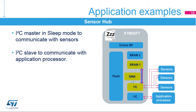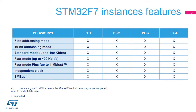Here is an example of a Sensor Hub application that requires several I2C peripherals. One or several I2C masters are used to interface with external sensors, and an I2C slave is used to communicate with the application processor. STM32F7 microcontrollers embed four I2C peripherals, all with the same set of features.